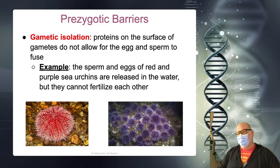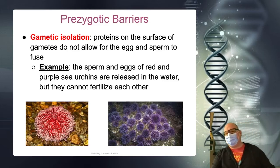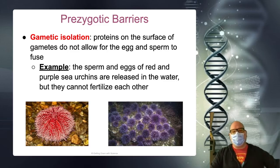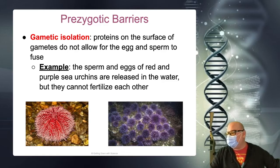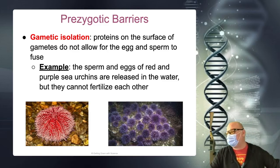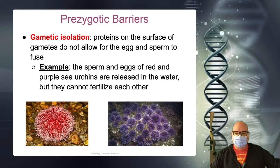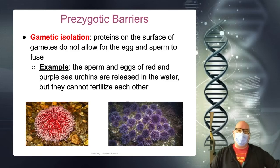This one is the closest to mating that's still not successful. There are different proteins on the surface of sperm and egg that sort of let them lock together. If those proteins are incompatible, you never get a zygote. In this example with sea urchins, they release everything into the water, but they're not going to fertilize because they are incompatible on a subcellular level. Those are your five examples of prezygotic barriers.